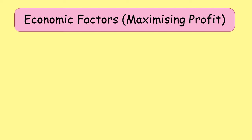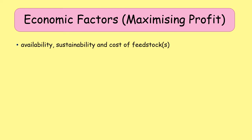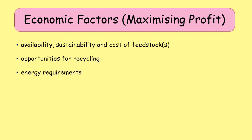We're going to look at the economic factors first — how to maximize profit. You want to make sure that your feedstocks, which are the chemicals you use, are available, sustainable, and not costing you too much. You want to look for where you can recycle any materials that you produce, consider what energy you are using, whether you can reduce that, and whether you can potentially get your energy from a renewable source. If your chemical process produces more than one product, which is very common,